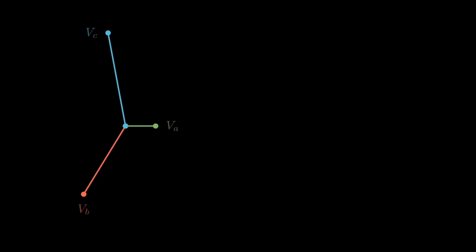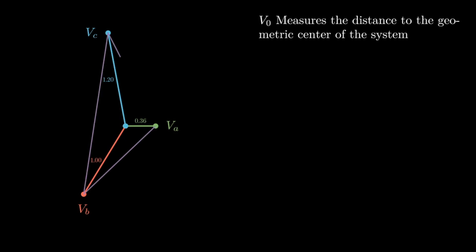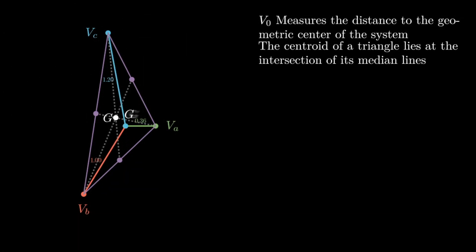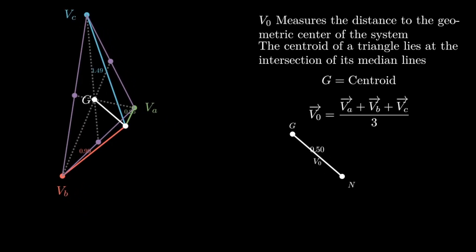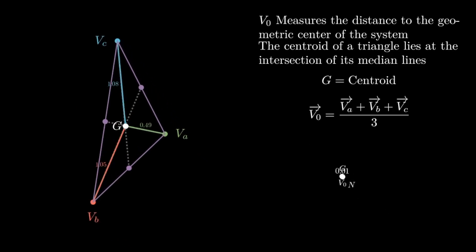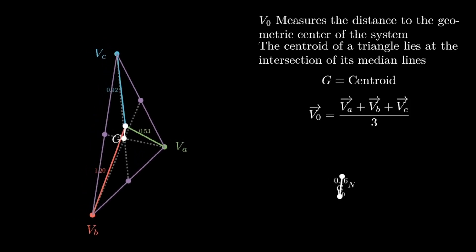So how can unbalance in a three-phase system be described? Like before, the V0 component takes the average of the three phasors and finds the line to the geometric center of the system. To find the geometric center of a triangle, trace a line from each of the triangle's corners to the midpoint of the opposing side. The intersection of these lines gives the geometric center of the triangle, called the centroid. The V0 phasor is just the line connecting the phasor origin to the centroid. Note that as the magnitude and phase of V0 change, the shape of the triangle stays the same. The triangle is only translated across the plane. In this way, V0 records the translation symmetry of the system.